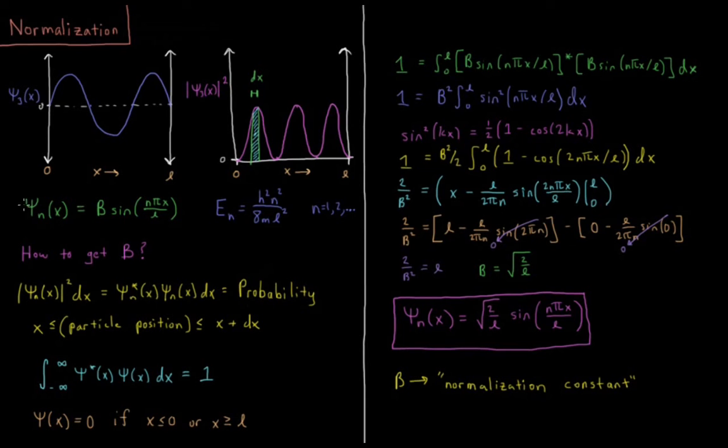So our wave function for the particle-in-a-box from the previous video was that psi n of x versus our quantum number and our position variable x is equal to some constant times sine n pi x over L, the length of our box here, going from 0 to L.